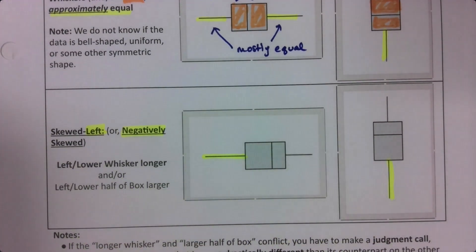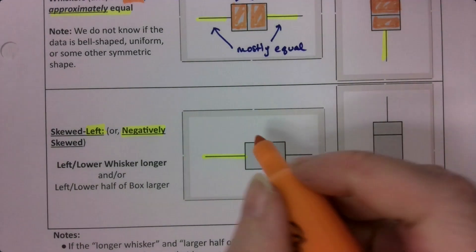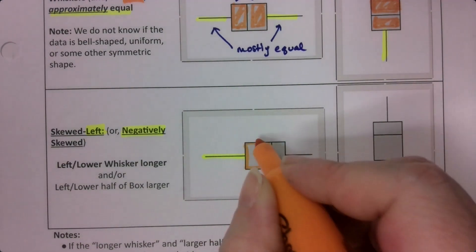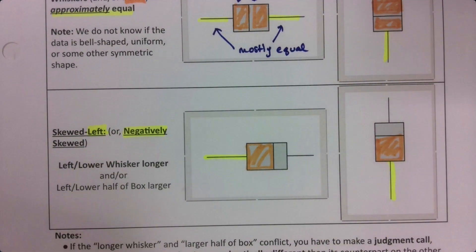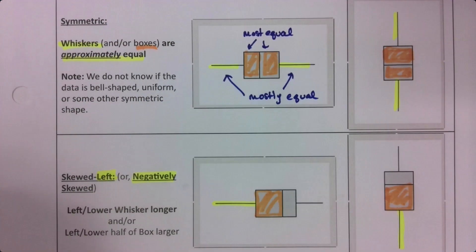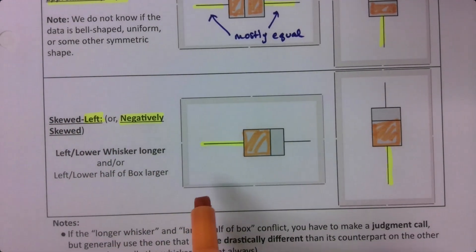Or you could have a longer whisker or a longer box on that side. So this one up here, it's the whiskers you look at or the boxes. This one is the whiskers of the boxes.